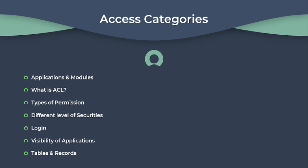However, those records will only be visible and editable if the user has the required access. This access for tables and records is based on an ACL, which is also known as Access Control List. ACLs are basically the fundamental part of controlling access to data and functionality within the platform. They are used to specify who can access or modify records, fields, or tables in the system. ACLs in ServiceNow define the rules that determine whether a user has permission to perform a certain action such as read, write, create, delete, or update records.